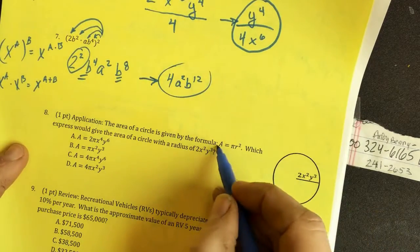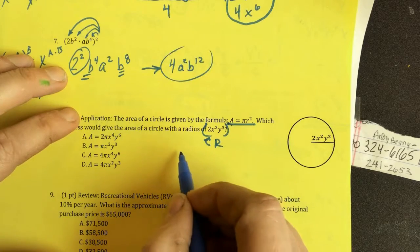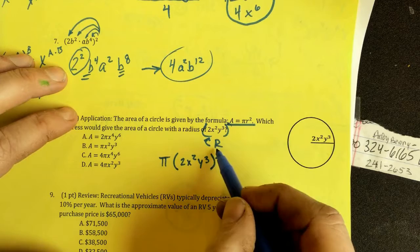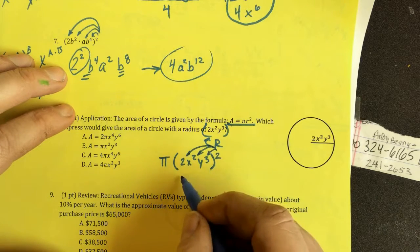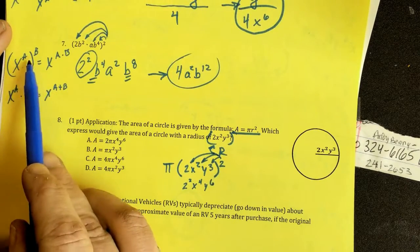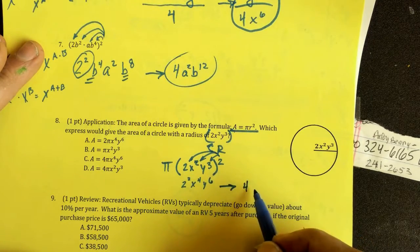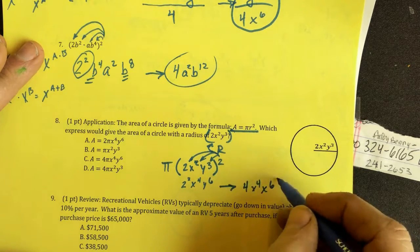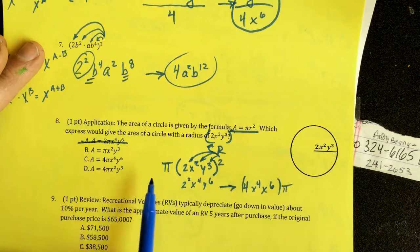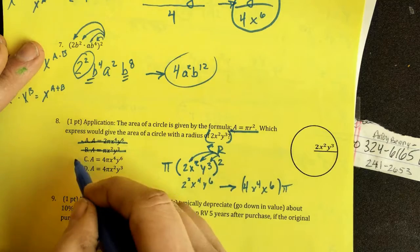Here, we're given this formula. And they want us to plug in this for R. So, pi times 2X squared Y cubed squared. This 2 goes to each item. So, I have 2 squared X to the 4th, Y to the 6th. The shortcut, as we said a moment ago, for power of a power is to multiply. So, I did 2 times 2, 3 times 2. That's 4, X to the 4, Y to the 6, pi. 2 squared is 4. There's no 4 in it. It's one of these two. X to the 4, X to the 4, Y to the 6, Y to the 6. There's our answer.